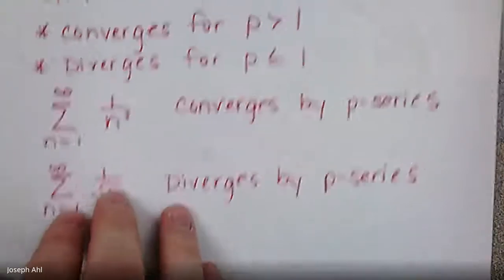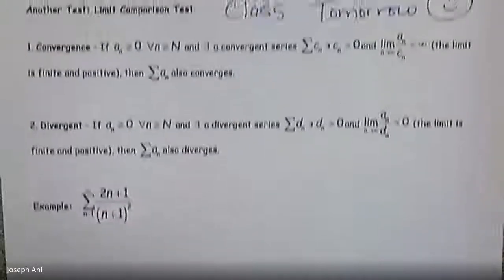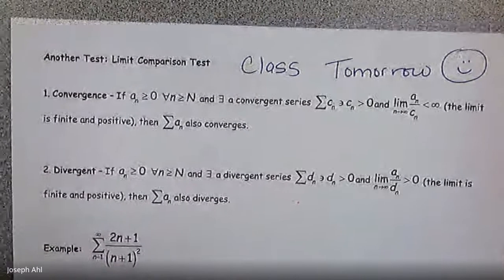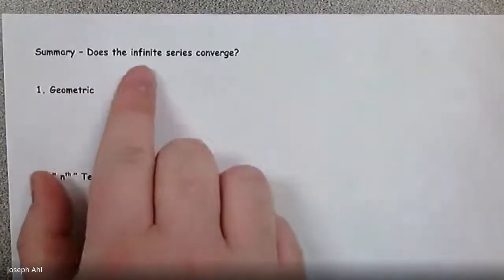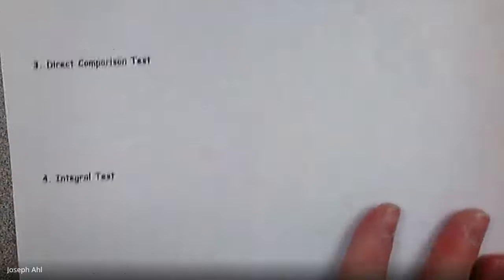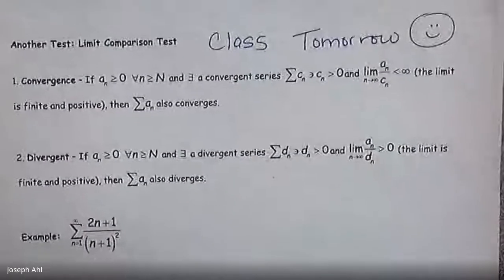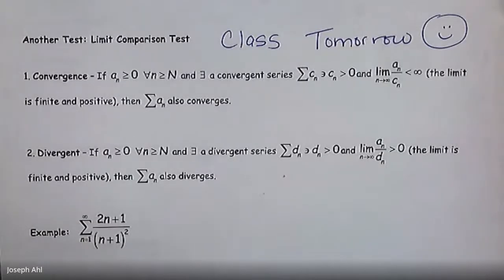We'll stop here for today. There's another comparison test — the limit comparison test — which we'll look at in class tomorrow. We've already talked about limit comparison when determining convergence of improper integrals, so we'll make that connection. The last part of the notes is a summary of five tests we'll know by the end of this lesson. We'll save limit comparison for class along with the remaining examples. That's it for day 106 — have a fantastic rest of your day!